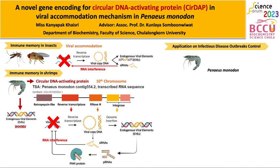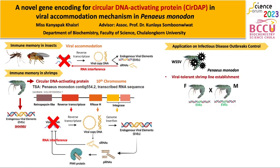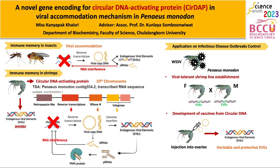You may wonder how we can apply this knowledge for infectious disease outbreak control. As we know, the major problem of shrimp aquaculture is viral disease, especially from white spot syndrome virus. Understanding the viral accommodation mechanism will be useful in establishing a viral tolerant shrimp line by selective breeding of EVE-containing shrimp. It can also use circular viral copy DNA as a vaccine — injected into the ovaries to generate EVE in the genome and pass it to offspring.